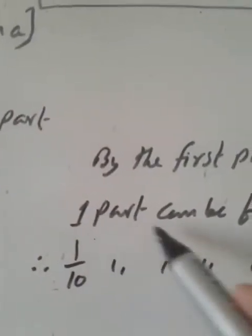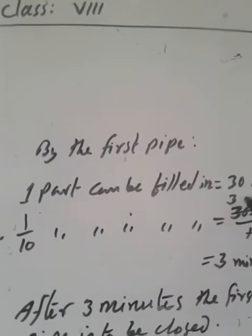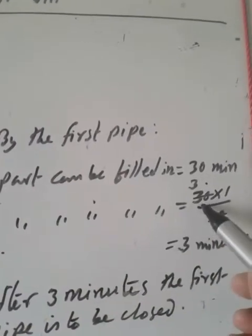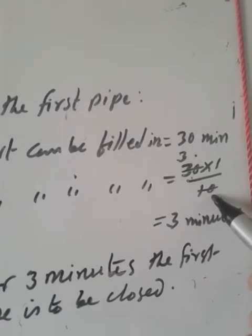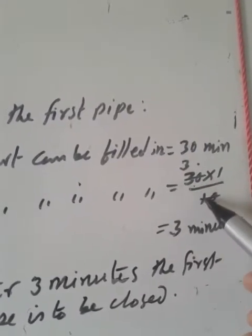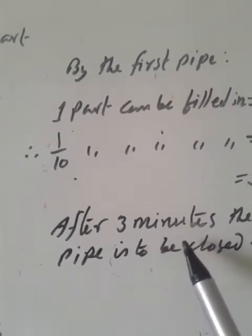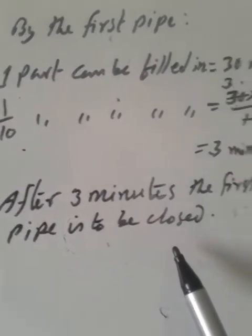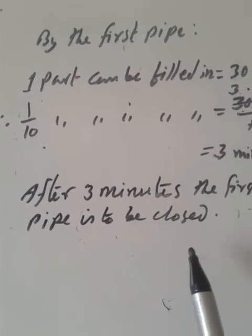The first pipe can fill 1 part in 30 minutes. So the first pipe fills 1/10 part in 30 divided by 10, which equals 3 minutes. Therefore, after 3 minutes we have to close the first pipe, so that the cistern is filled by the first and second pipe together in 18 minutes.